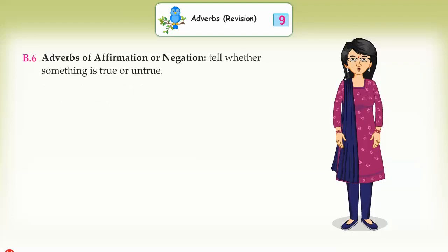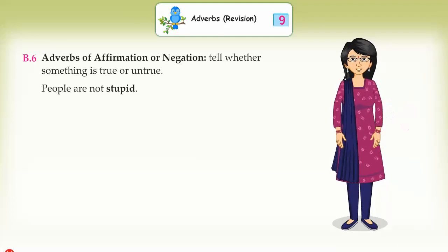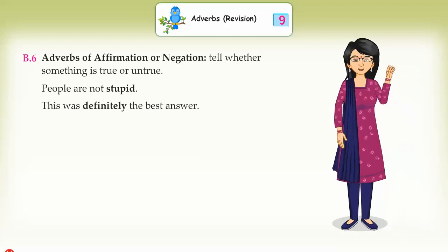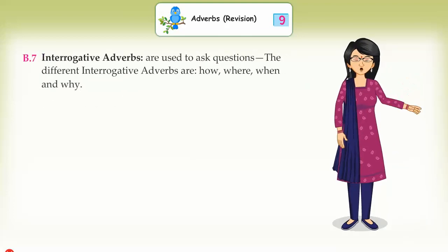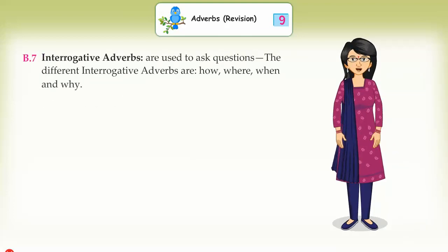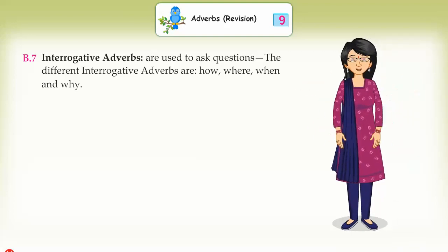B6: Adverbs of affirmation or negation tell whether something is true or untrue. Examples: People are not stupid. This was definitely the best answer. B7: Interrogative adverbs are used to ask questions. The different interrogative adverbs are: how, where, when, and why.